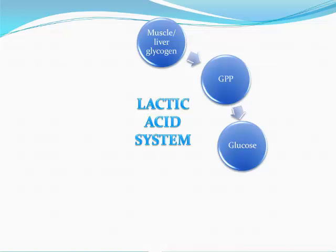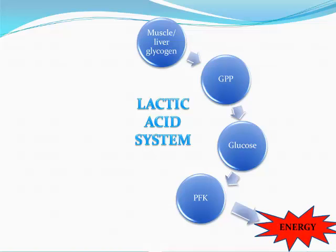A big problem with the lactic acid system is that there isn't sufficient oxygen. This glucose is broken down further because of this lack of oxygen by an enzyme called PFK. In doing this, we get energy — we get 2 ATP — and that energy is then used to re-synthesize ATP.